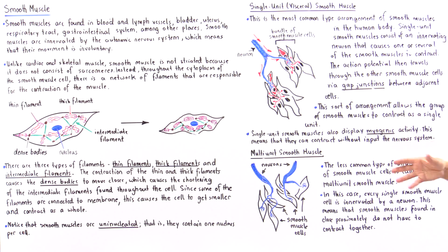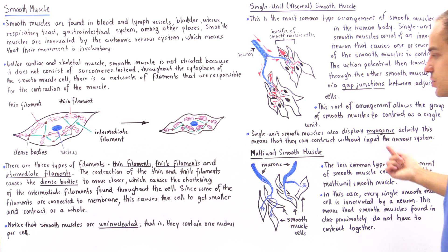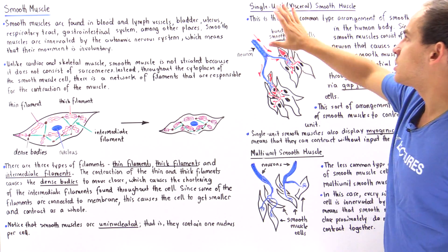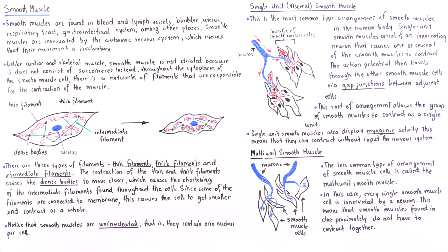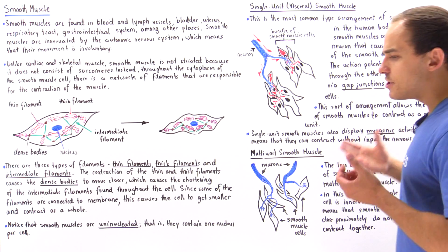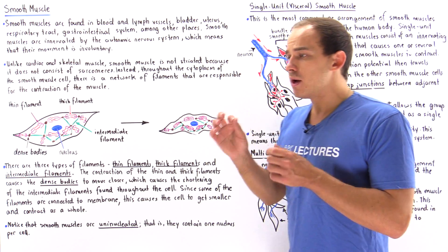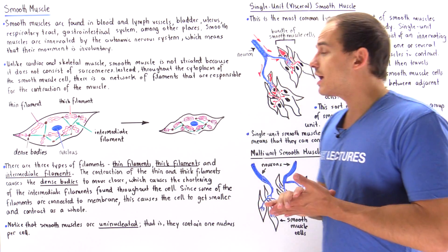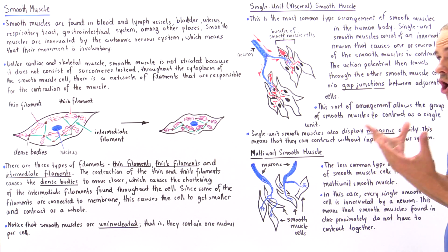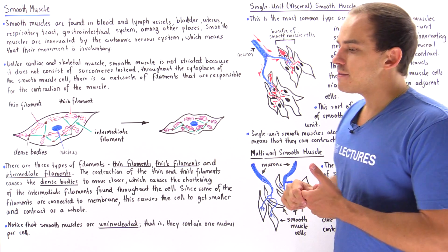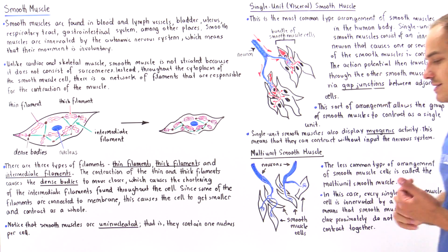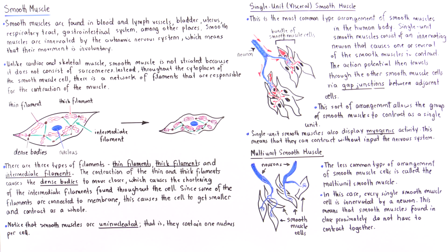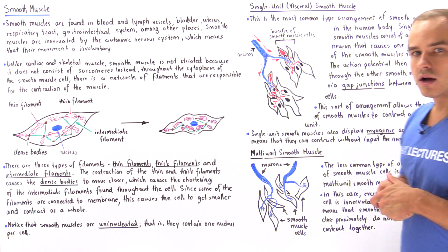This independence is what distinguishes the multi-unit smooth muscle from the single unit or visceral smooth muscle. Multi-unit smooth muscles are found in the iris of the eye, in large arteries, and in the bronchioles of the lungs.